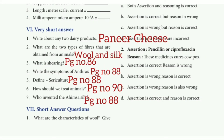Very short answer. First one: write about any two dairy products — the answer is butter and cheese. Second one: what are the two types of fibers that are obtained from animals? The answer is wool and silk.